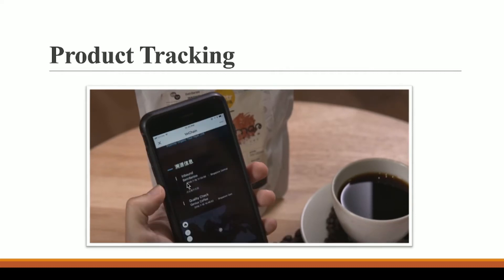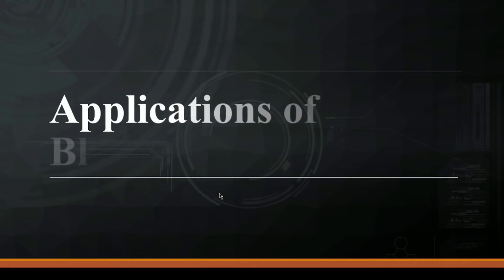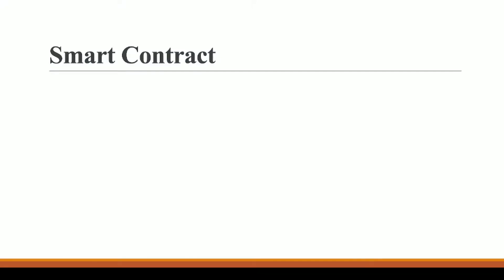Let's talk about another application of blockchain — smart contracts. This is one of the most important applications of blockchain. Smart contracts are simply programs that you write on blockchain, just like you write programs in C, C++, Java, or Python. They are programs written on blockchain — simple as that.